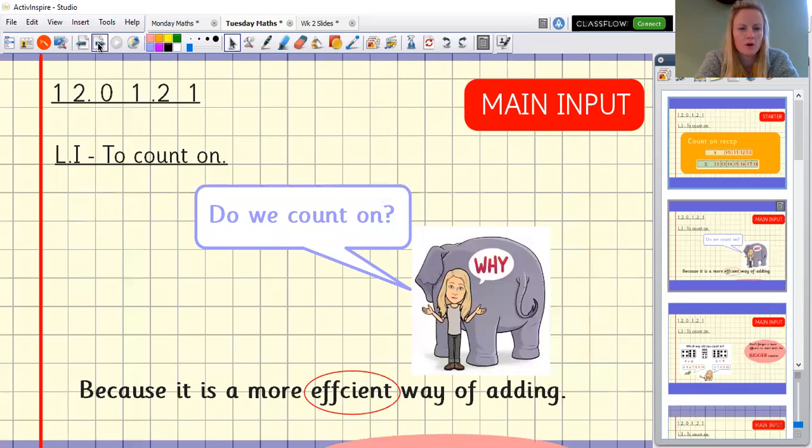So why do we count on? Do you remember what word we used to say the reason we counted on? It's down here and it's circled. We count on because it's a more efficient way of adding.